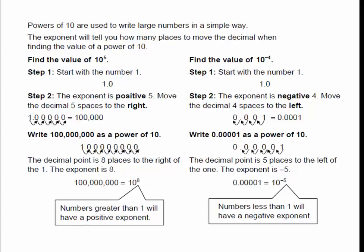Here are a couple more examples. To find the value of 10 to the 5th, positive exponent means move to the right. Write down the 1, then move 5 places, filling in with zeros. If you're writing as a power of 10 and you have the number 100 million, count how many places from the last zero all the way to the 1 — that's 8 places, so that's 10 to the 8th. Numbers greater than 1 will have a positive exponent.